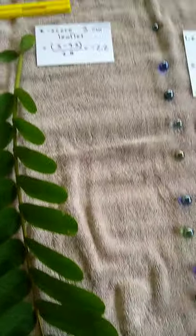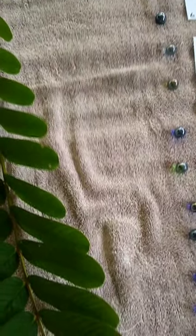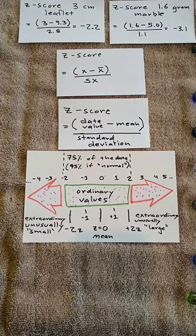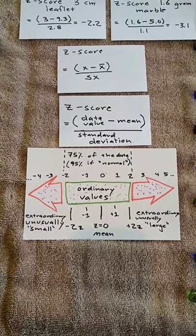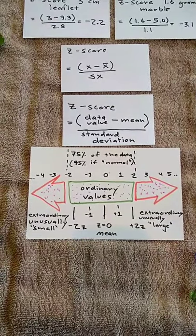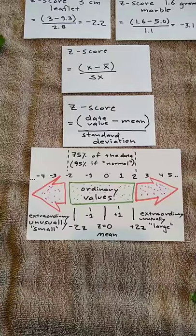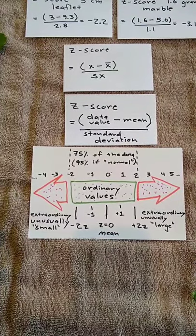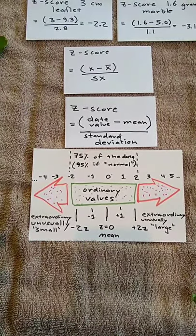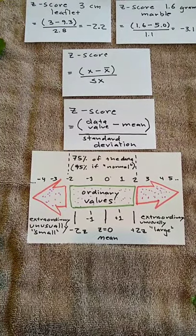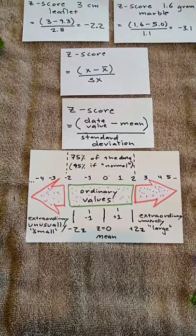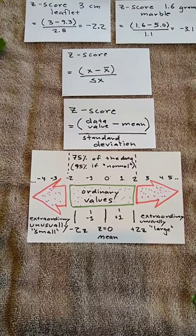Now there are some properties of z-scores to keep in mind. Data values with z-scores between negative 2 and positive 2 are considered ordinary values. They aren't that far away from the mean. Data values with a z-score below negative 2, such as our leaflets and our marbles, our Sinai marble and the little leaflets, those are extraordinarily or unusually small values. Above two standard deviations above the mean, data values would be extraordinarily large, unusually large values.